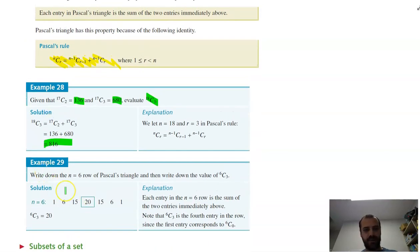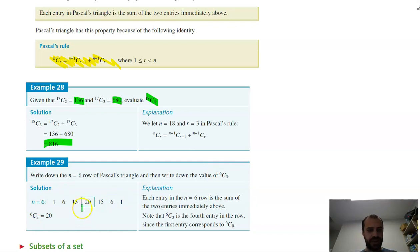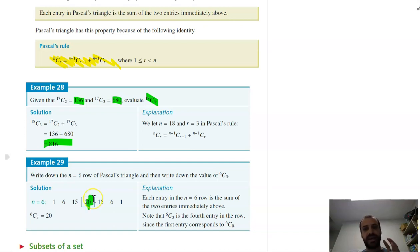The next exercise is to write down the N equals 6 row of Pascal's Triangle and then write down the value of 6C3. So they've written down the row and then 6C0, 6C1, 6C2 — and this is the one we want — 6C3. The next bit is probably the only really new, exciting, interesting part of this video.